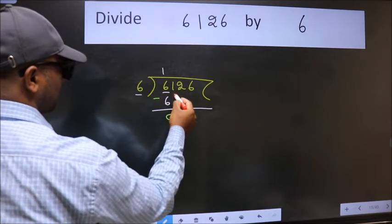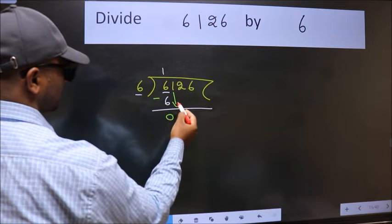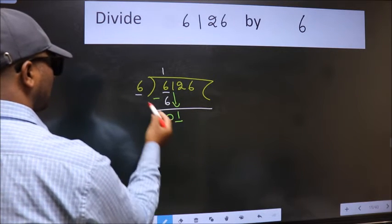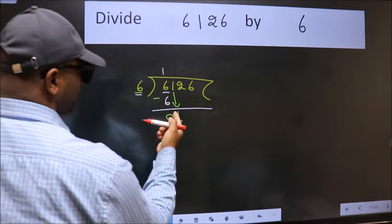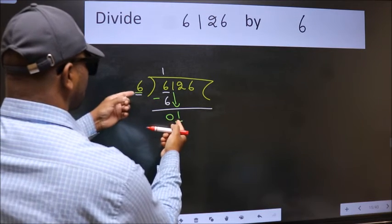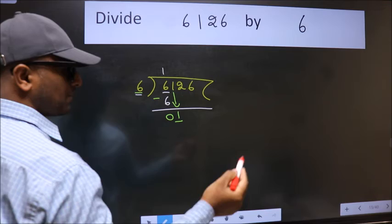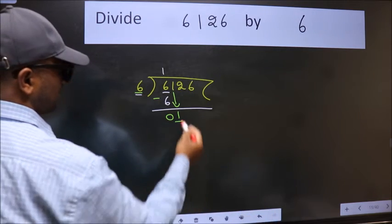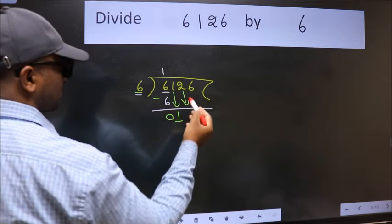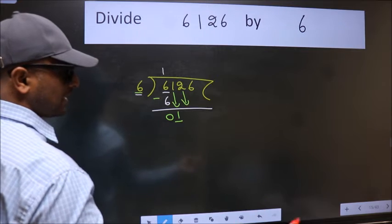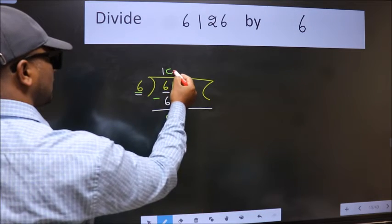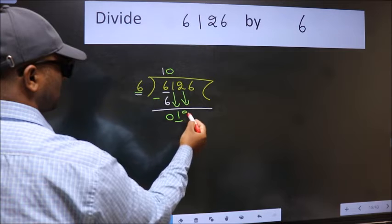After this, bring down the next number. So 1 down. Now here we have 1 and here 6. Since 1 is smaller than 6, we should bring down the second number. The rule for bringing down a second number is to put 0 here first, then we can bring this number down.